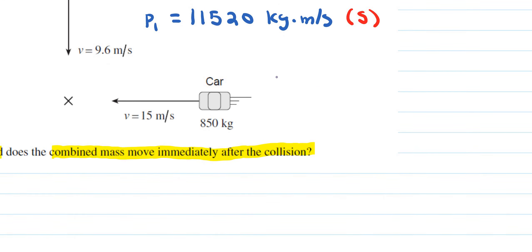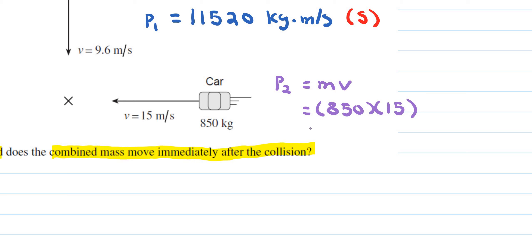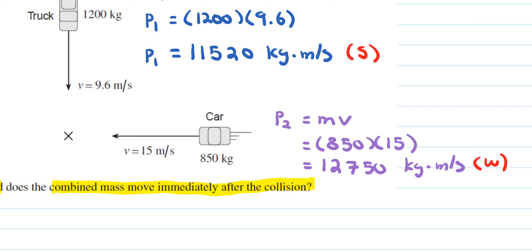Now for the second momentum P2 — the car's momentum — mass times velocity: 850 kilograms times 15 meters per second going west gives 12,750 kilogram·meters per second in the west direction. Those are our two momentum vectors.